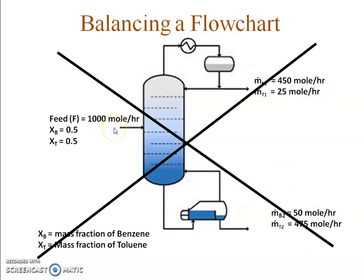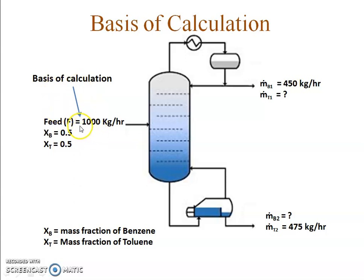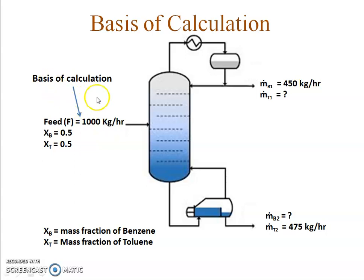In a later video I will show an example where you balance a flowchart first in kg and then convert into moles. Now, one more thing: in this problem I was given 1000 kg per hour as the feed, and all balance calculations were done based on this feed. If the feed is 1000 kg per hour, then what is coming out is 450 kg per hour in one stream and 475 kg per hour in another. This feed is known as the basis of calculation — I am basing all balance equations on this given amount.